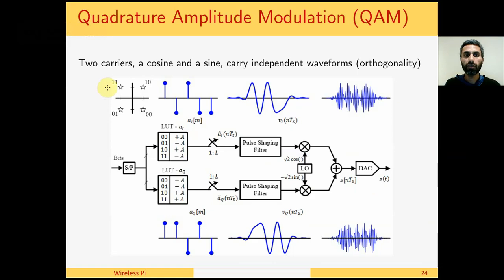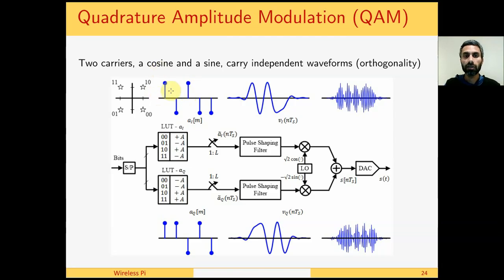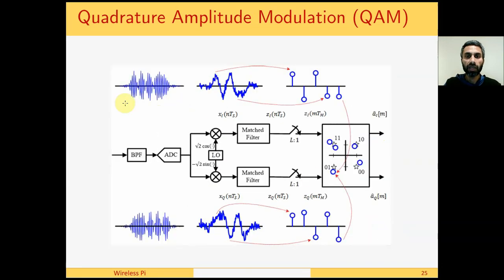Quadrature amplitude modulation is very similar to pulse amplitude modulation, with the difference that it has two carriers — a cosine and a sine — and they carry independent PAM waveforms. For example, here we have the symbol sequence, the pulse-shaped sequence, and the local oscillator generated high-frequency signal. A similar relationship can be noted in QAM where these two are summed together and sent over the air.